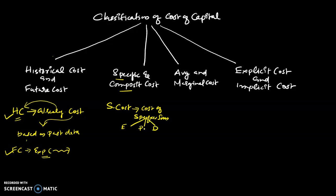When we arrive at the cost of a specific individual item, that is called specific cost. Composite cost means the weighted average cost of capital — the overall cost of capital. Weighted average means composite cost.